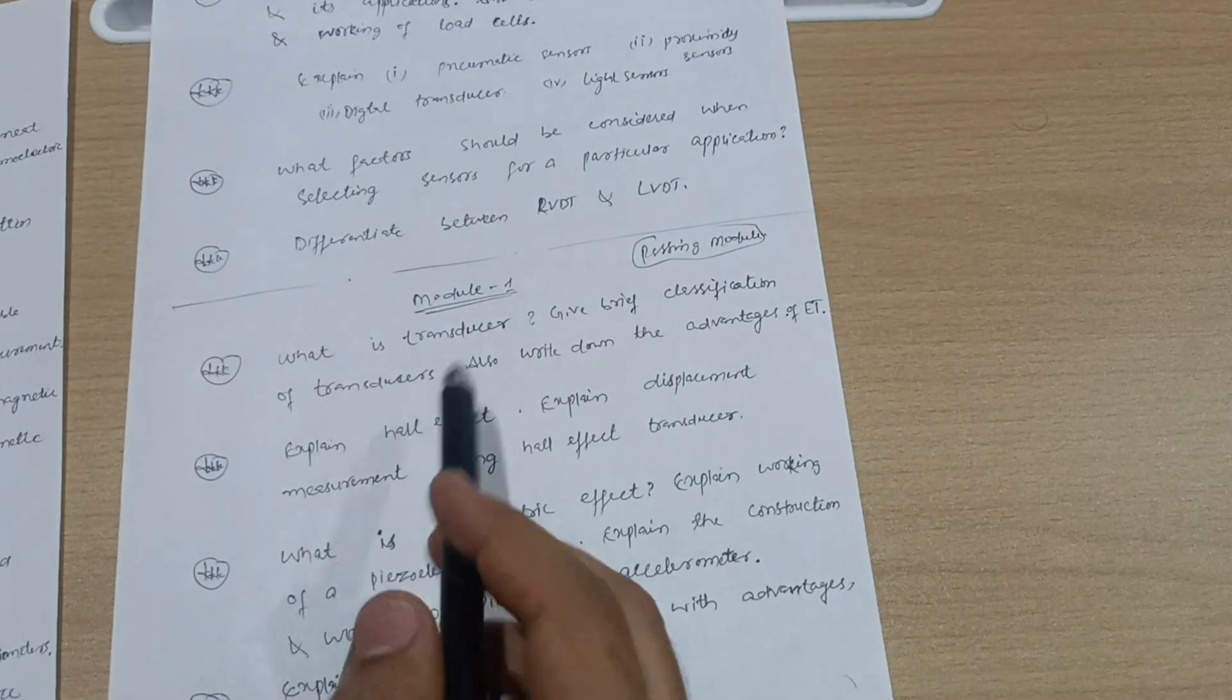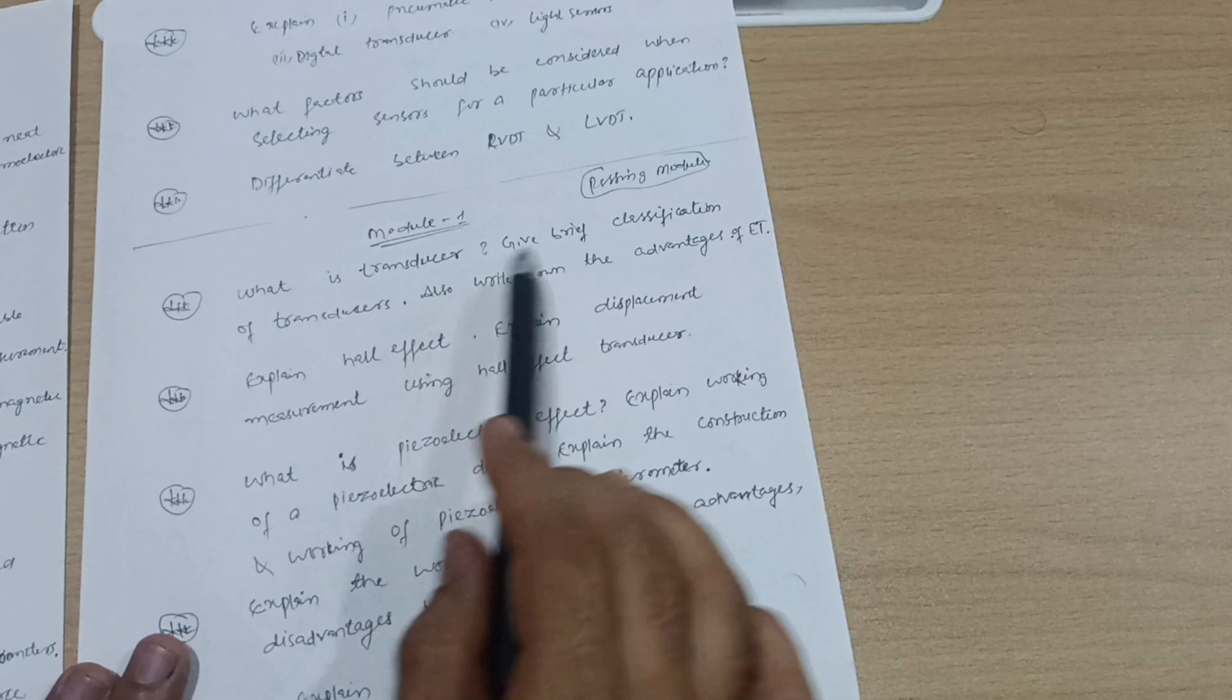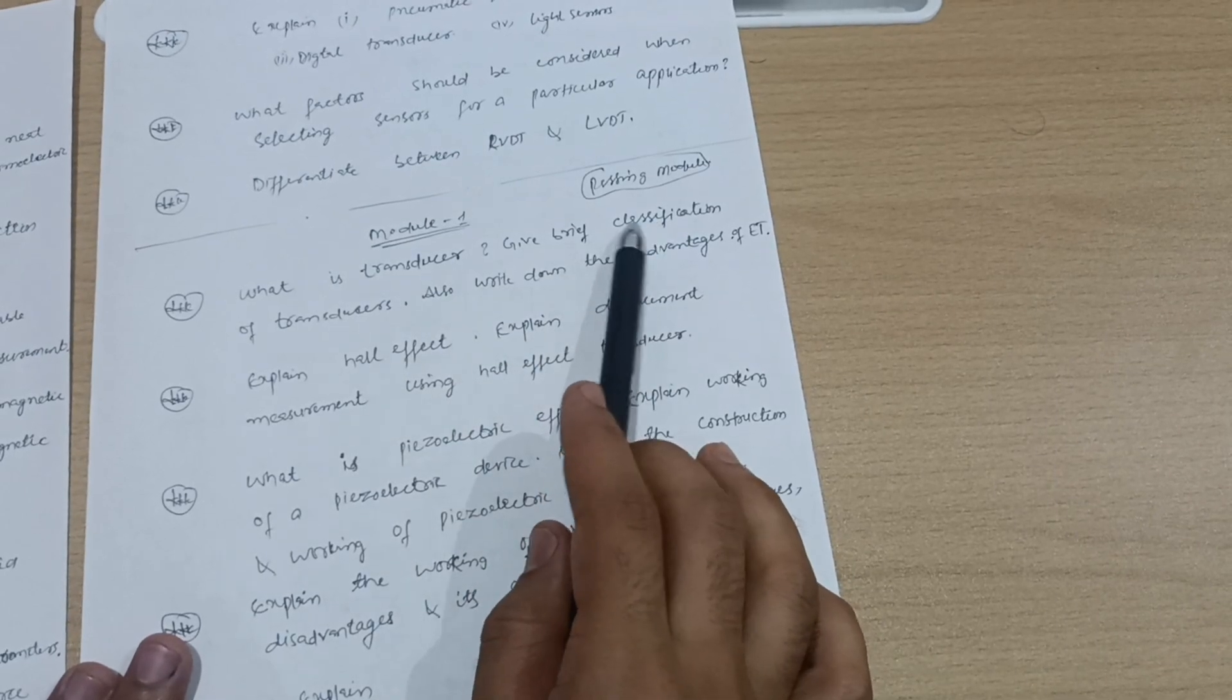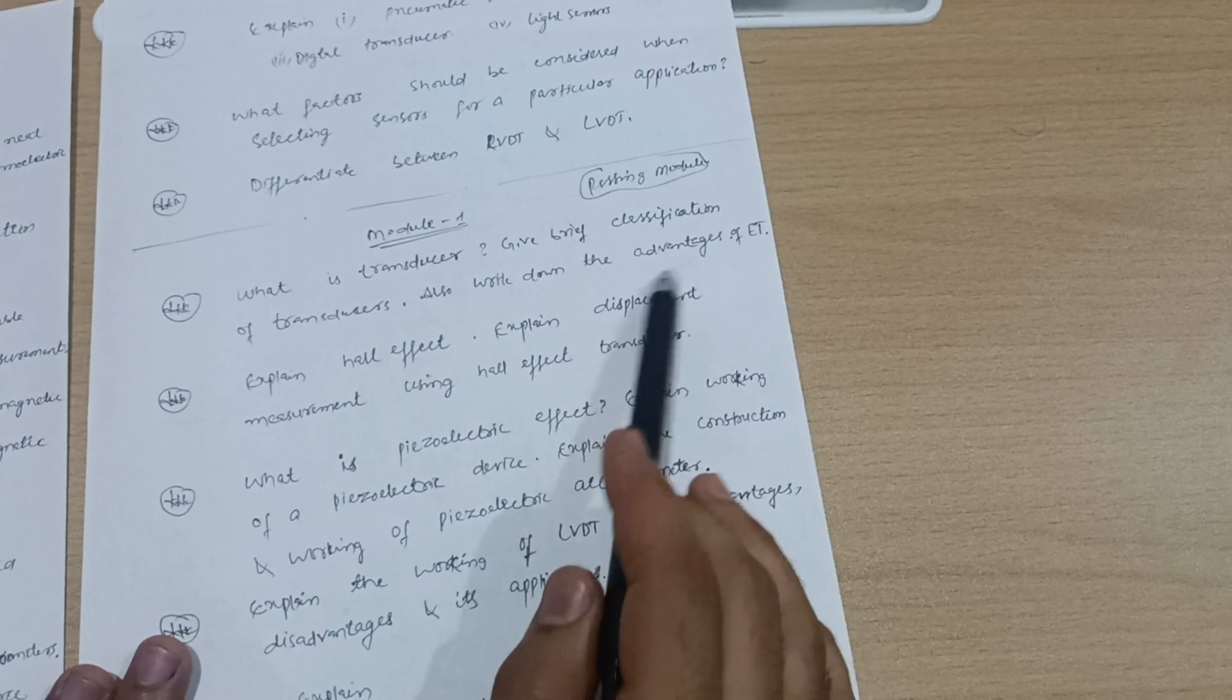the first module in which you have to cover important questions like: What is a transducer? Give brief classification of transducers and write down the advantages of electrical transducers. This is the first one.